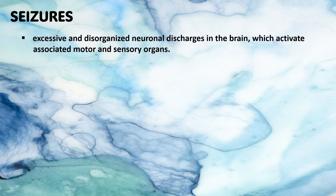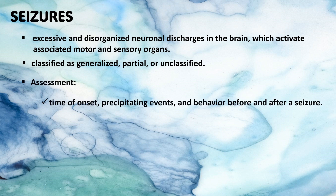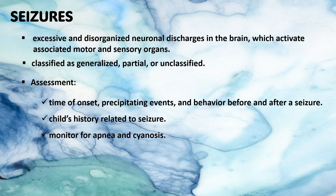In relation to pediatric disorders, let's talk about seizures. Seizures are characterized by excessive and disorganized neuronal discharges in the brain, which activate associated motor and sensory organs. Depending on the area of the brain affected, they are classified as generalized, partial, or unclassified. For assessment, get information from the parents about the time of onset, precipitating events, and behavior before and after a seizure. Determine the child's history related to seizures, monitor for apnea and cyanosis. After the seizure, the child is disoriented and sleepy.